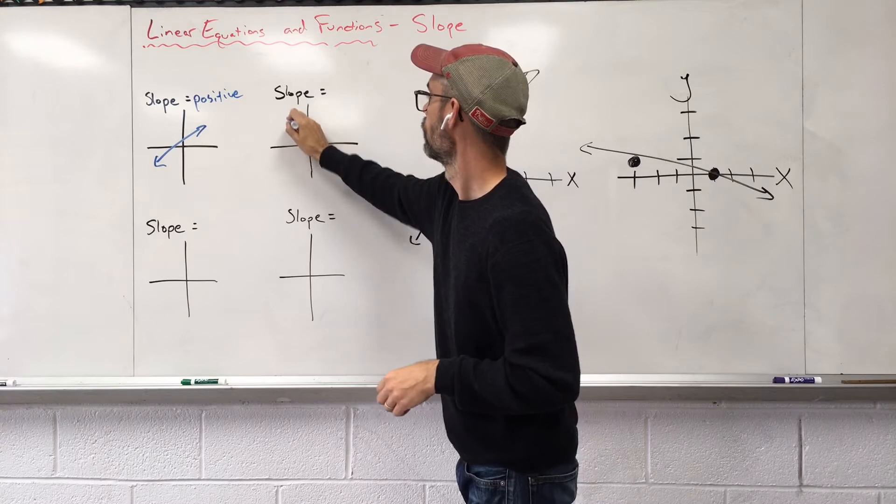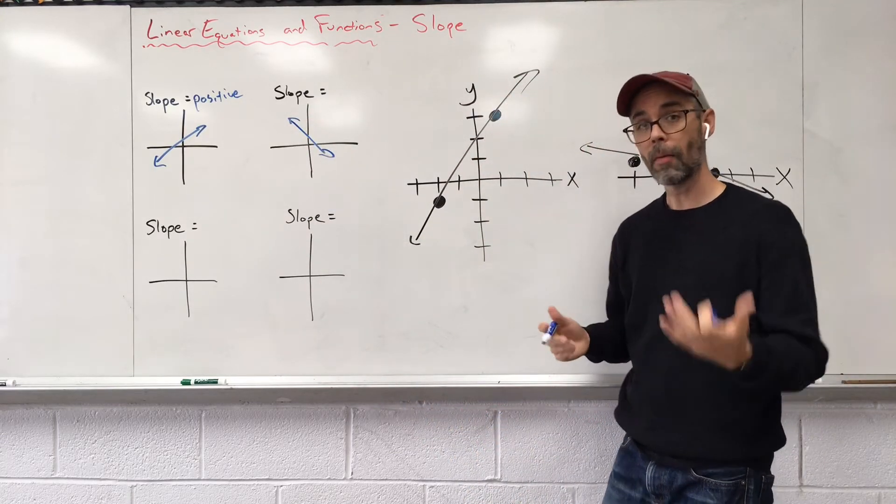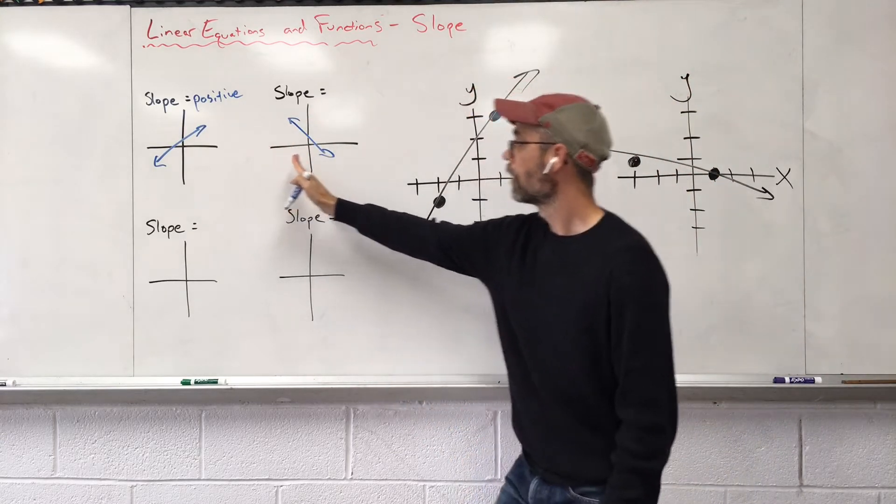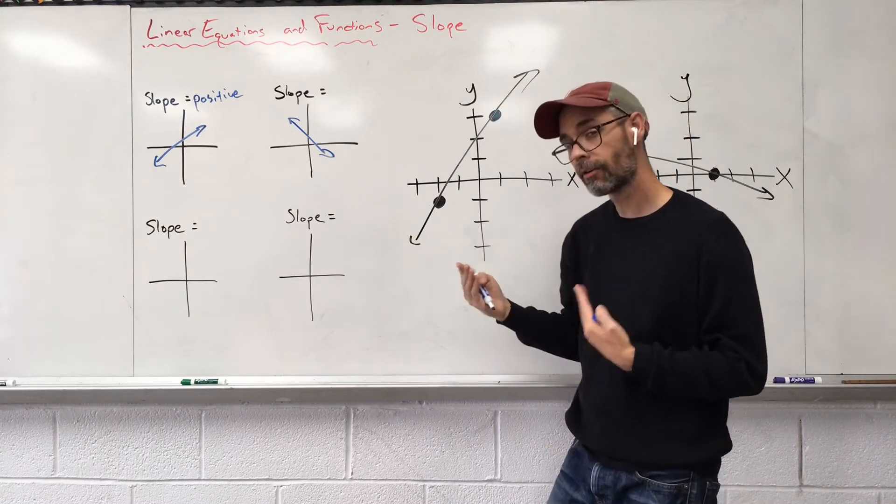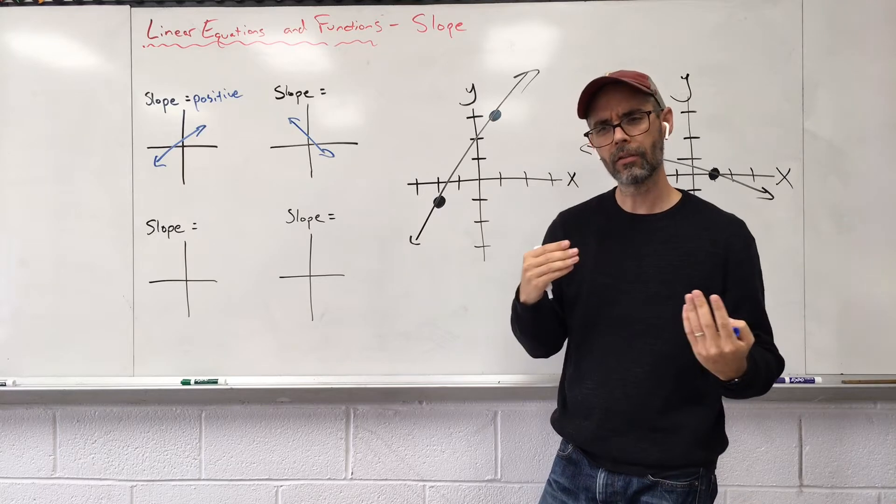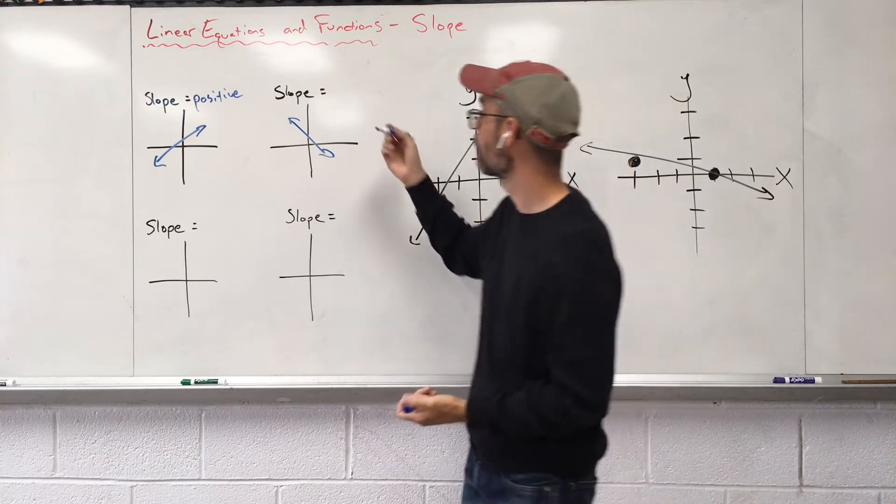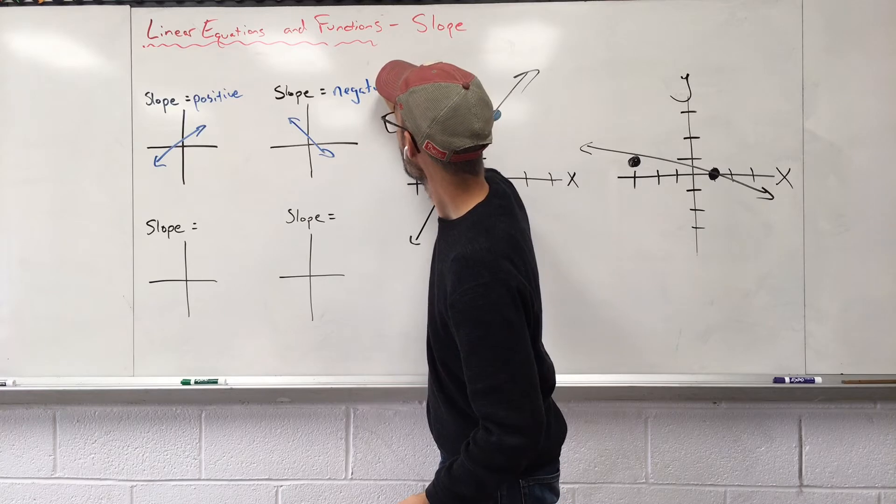What if I got a line that looks like that? Again, read a book. We're going from the left to the right. Do you go uphill? Do you go downhill? We tend to go downhill now. If going up was positive, going down has to be negative.